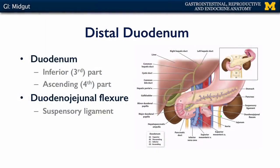The duodenum itself is largely retroperitoneal, meaning it's found behind the peritoneum — at least the second, third, and fourth parts. The first part of the duodenum, contiguous with the pyloric part of the stomach, is intraperitoneal. The duodenum ends in association with the jejunum in a region known as the duodenojejunal flexure, supported by a suspensory ligament, or the suspensory muscle of Treitz. From the duodenum, materials enter into the jejunum.